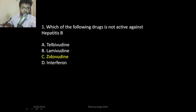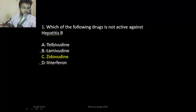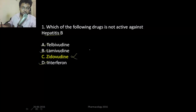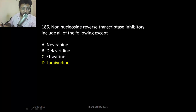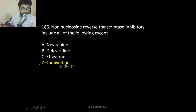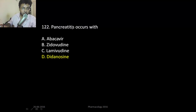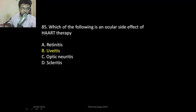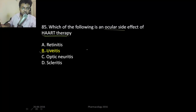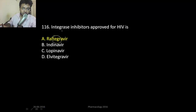Which of the following is not active against hepatitis B? Interferons are the mainstay for treatment of hepatitis B, and telbivudine and lamivudine are also used. Lamivudine is used in both HIV and hepatitis B. But zidovudine has no activity against hepatitis. All are NNRTIs except lamivudine, which is an NRTI — a nucleoside that gets converted into nucleotide, it's a prodrug. Pancreatitis occurs with didanosine, most specifically. The most common side effect in HAART therapy is uveitis — most common ocular side effect. Integrase inhibitor: Raltegravir.